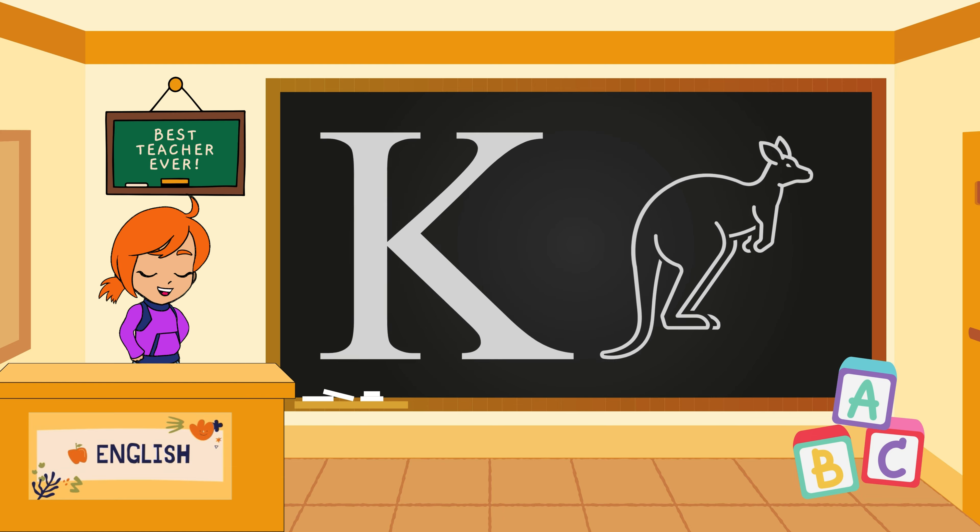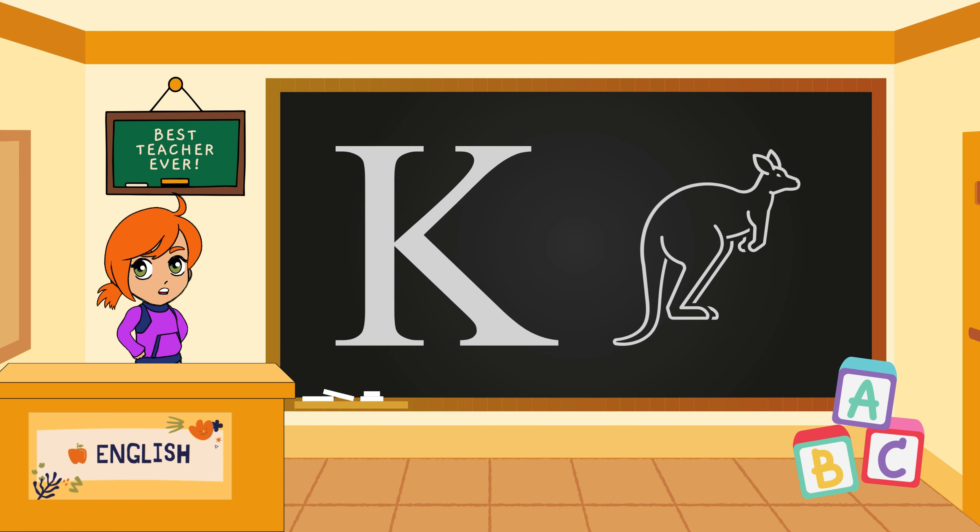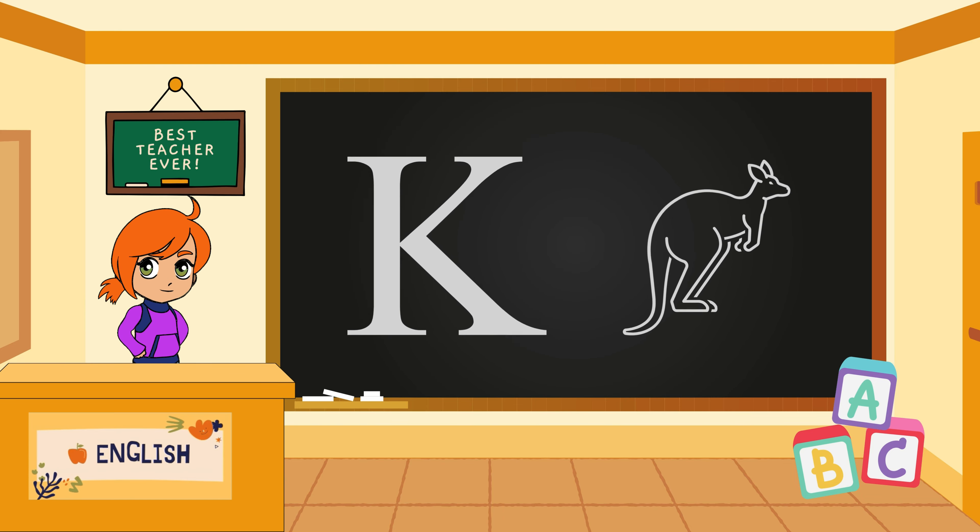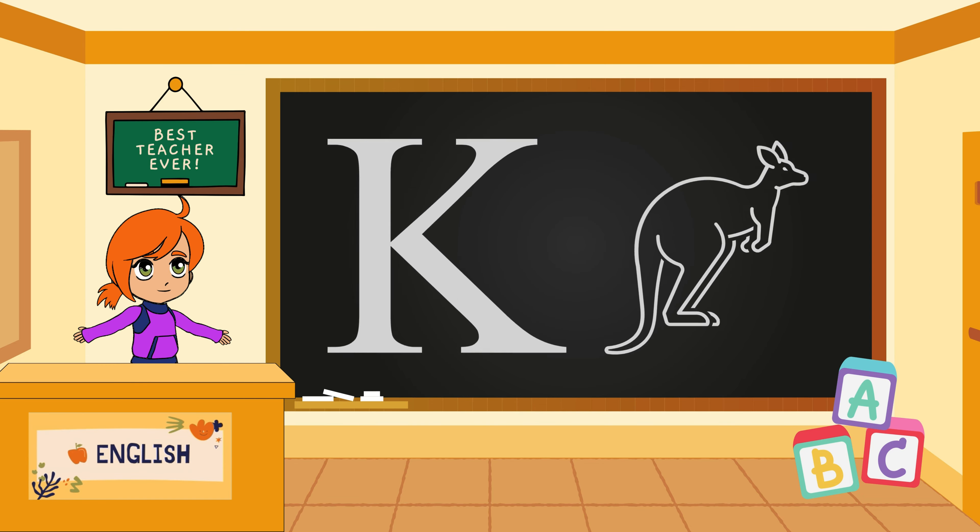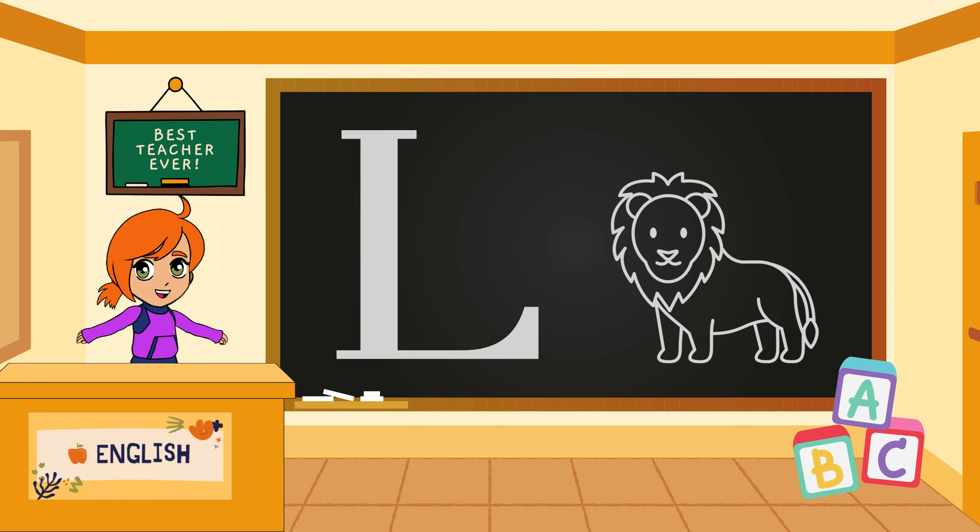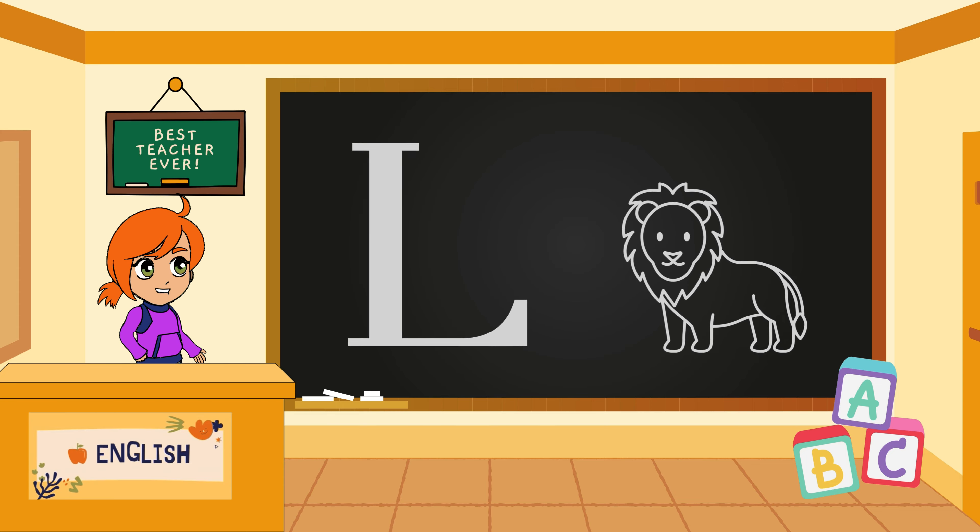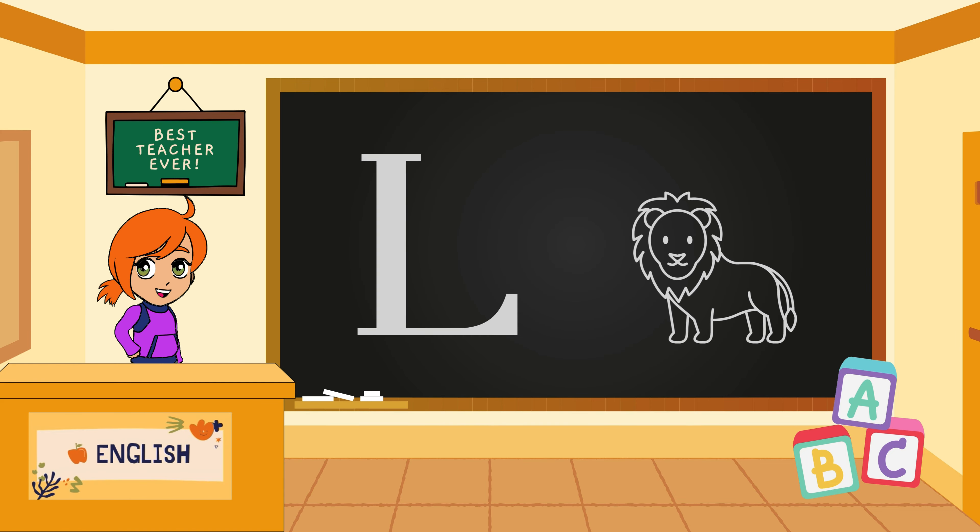K arrives royally with a kingly kangaroo. Picture a kangaroo hopping around. K makes the sound kuh. L enters with a laughing lion. Imagine a lion joyfully roaring. L makes the sound luh.